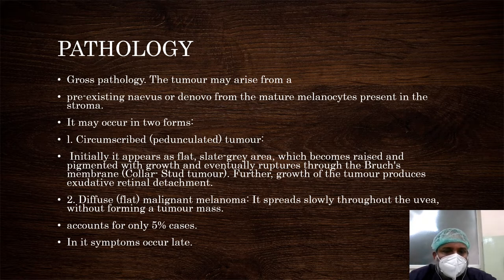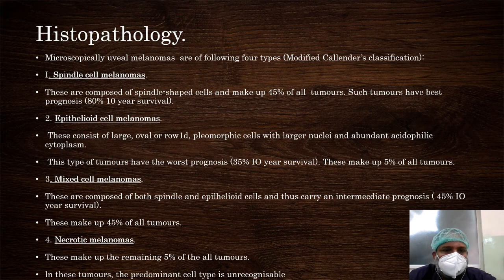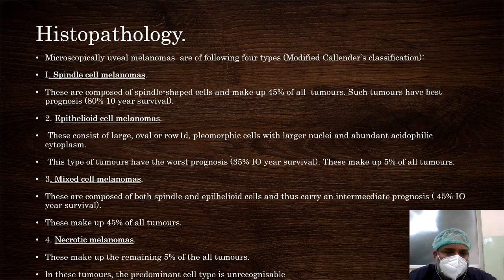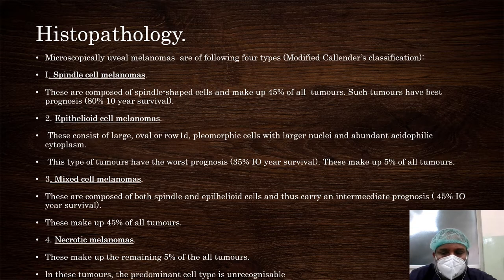Diffuse melanoma spreads slowly through the uvea without forming a discrete tumor mass and accounts for only 5% of cases. According to the modified Callender classification, there are spindle cell melanomas, epithelioid cell melanomas, mixed cell melanomas, and necrotic cell melanomas. Spindle cells comprise 45% of tumors and have the best prognosis. Epithelioid cells are large oval or round cells with large nuclei, have the worst prognosis, and account for about 5% of tumors. Mixed cell melanomas contain both spindle and epithelioid cells with intermediate prognosis, representing 45% of tumors. Necrotic melanomas comprise the remaining 5%, where the predominant cell type is unidentifiable.